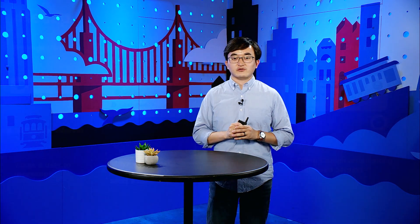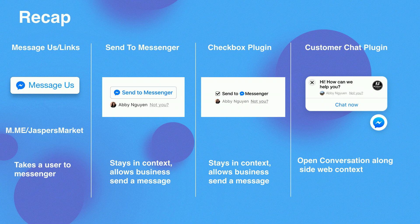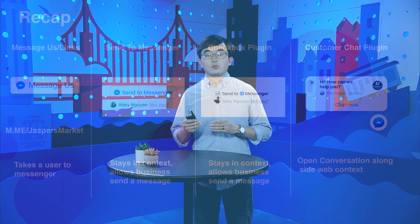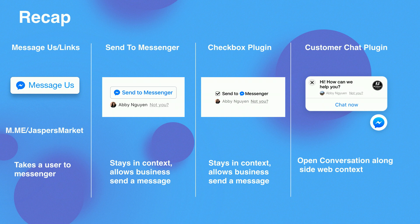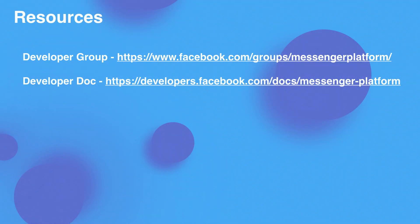When users click and you have set a ref param, we will send a webhook event so you know a user started the conversation from the Customer Chat plugin, and you can customize the experience from there. Let's have a recap. We have four plugins on Messenger Platform: Message Us and m.me links that take the user to Messenger and open a thread directly with the business; Send to Messenger plugin that helps the user stay in the context of the website and opt in to receive messages; Checkbox plugin that you can blend into your own business flow for opt-ins; and Customer Chat plugin that allows users to open conversations right on your website without leaving the context. Each is designed for different use cases, so choose the right plugin for your use case. If you have more questions, you can visit our developer group on Facebook or our dedicated developer docs on Messenger Platform. Thank you.